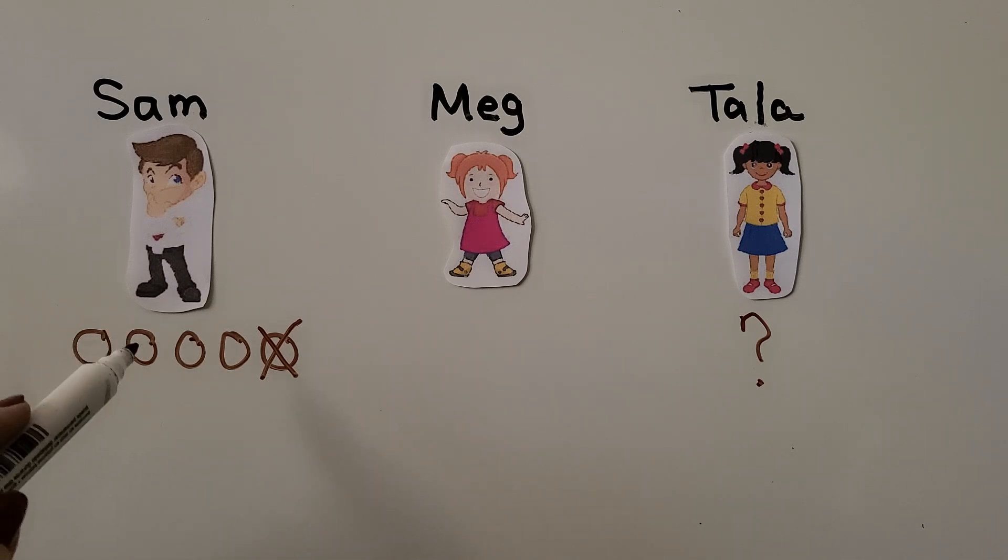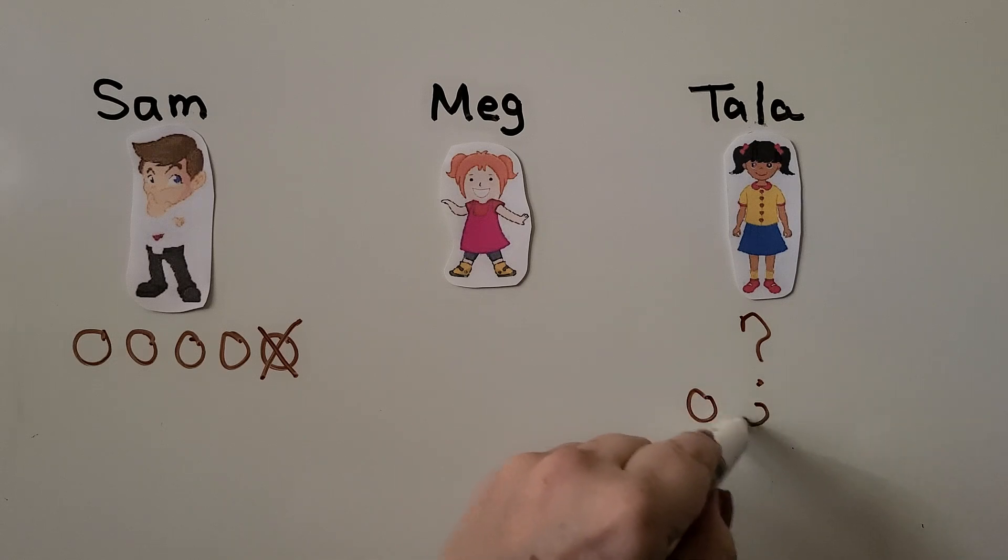It was 1 less than Sam. Tala must be 1, 2, 3, 4. One less than 5 is 4. We know Tala found 4 acorns.